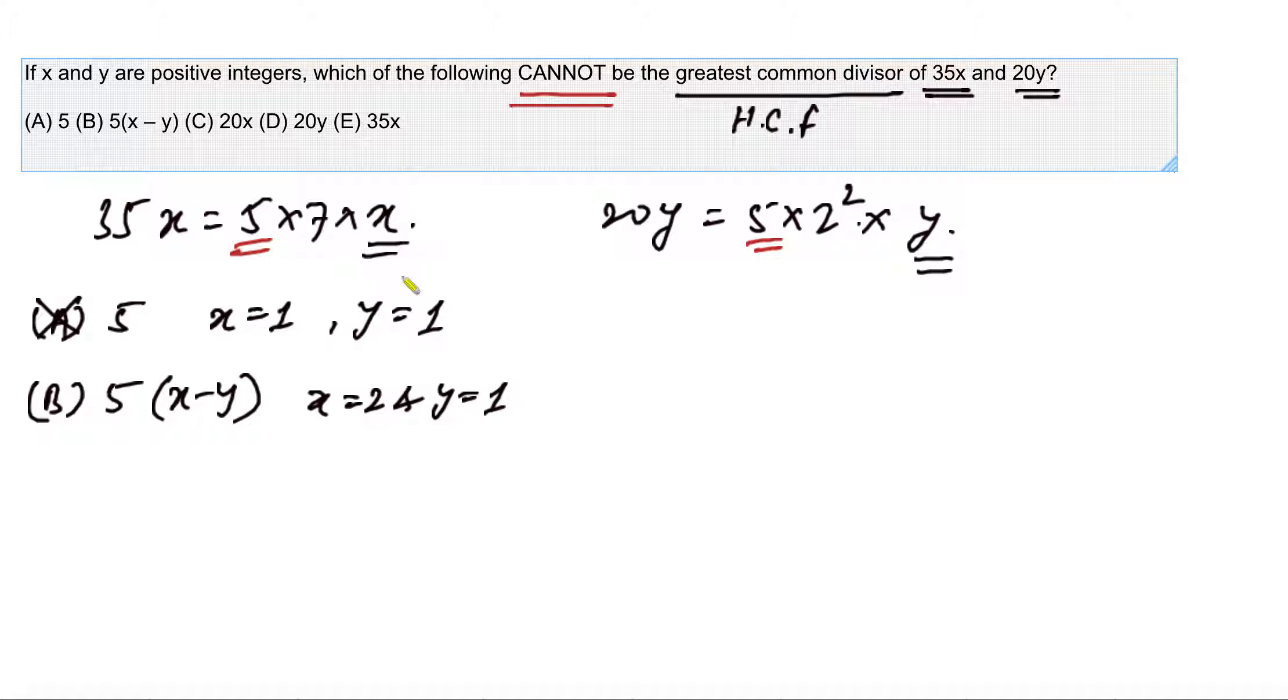But you will quickly realize that if I take x equal to 2, then we already have 2 as a prime factor of 20y. So the highest common factor will not be 5; instead that will become 10. So this set of values cannot be taken for our purpose. So we choose another set of values: x equal to 3 and y equal to 2.